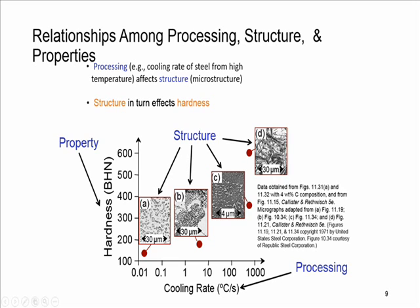The graph shows how a specific type of steel's property is affected by its structure. Here, the steel is cooled down at different rates, as you can see on the horizontal axis, from left to right, resulting in different structures. And different structures result in different values of hardness of the material. We will discuss each of these terms in detail later.